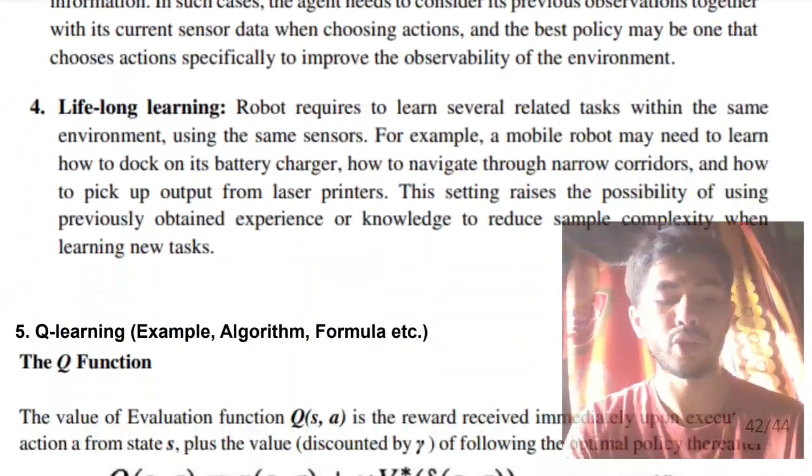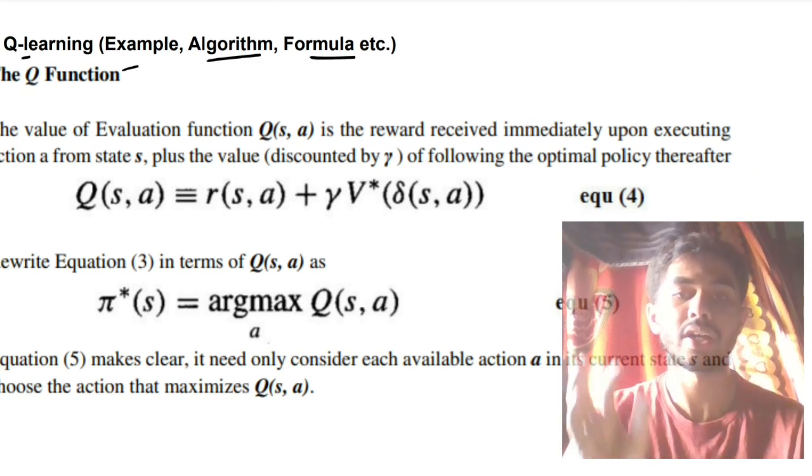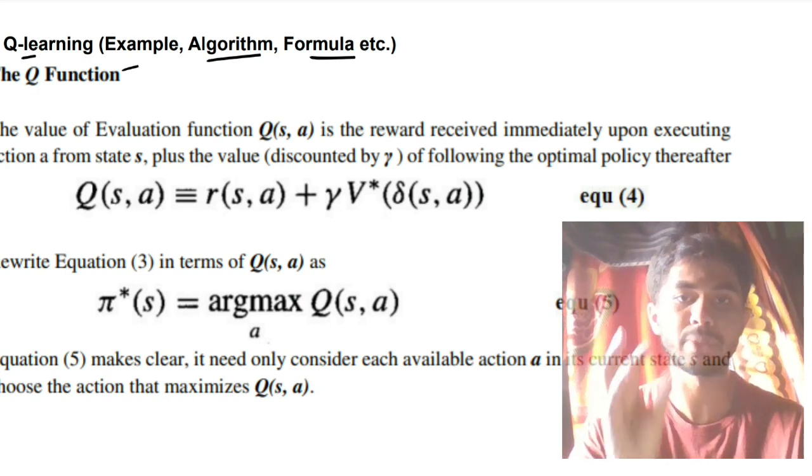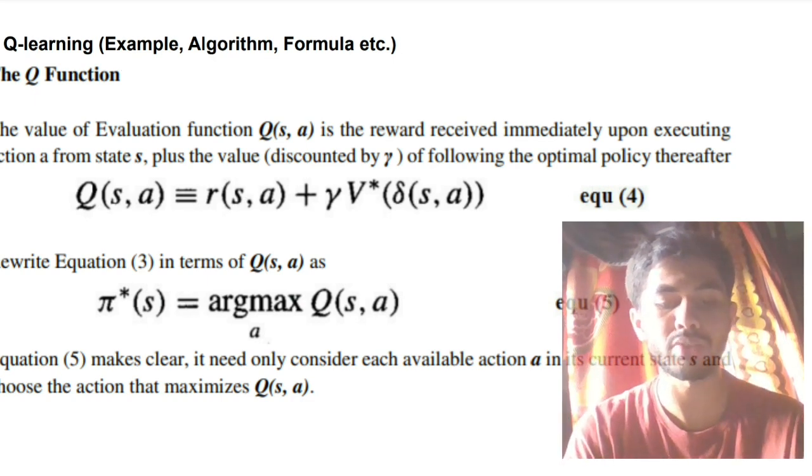That was about reinforcement learning. Moving on to our final question, which is Q-learning example, algorithm, and formula you have to write. What is Q-learning? The implementation of reinforcement learning is based on Q-learning. There is some formula, there is some algorithm which will be applied to implement and execute reinforcement learning. So what is the formula?